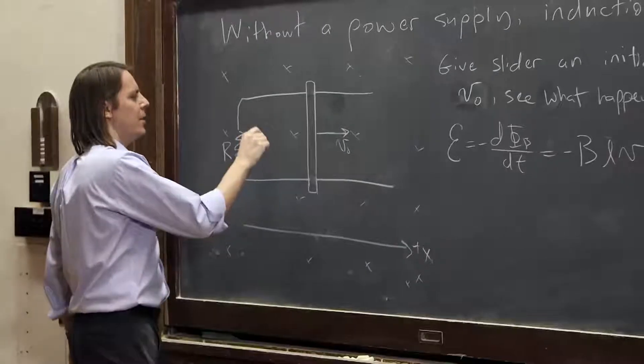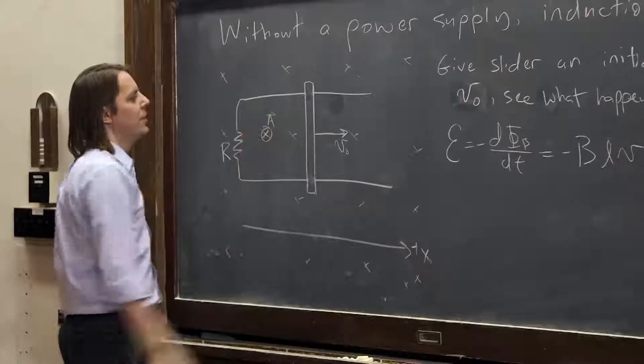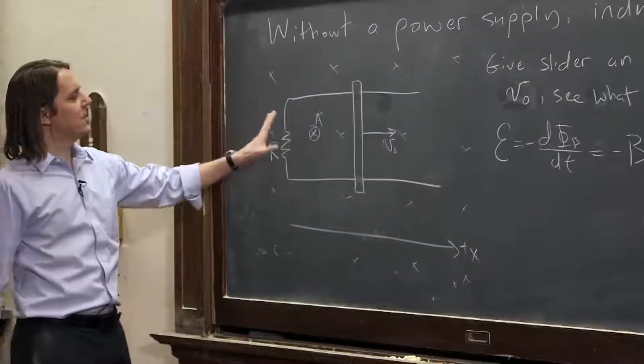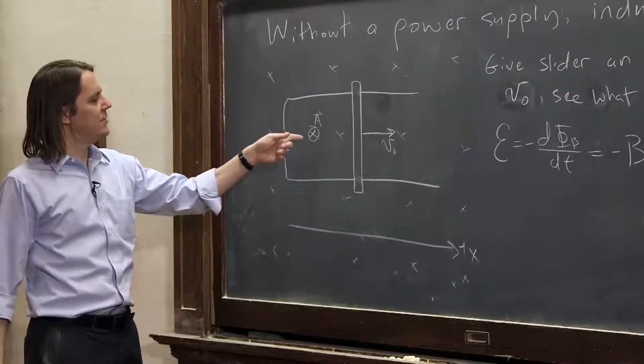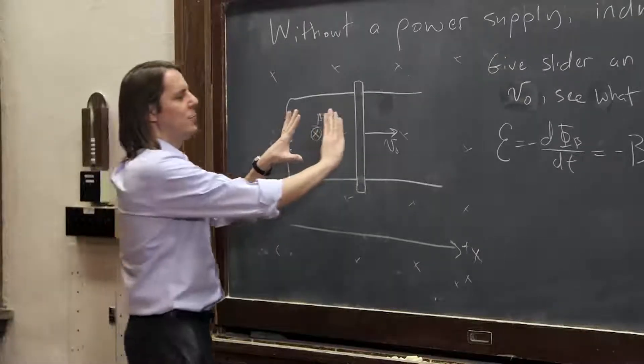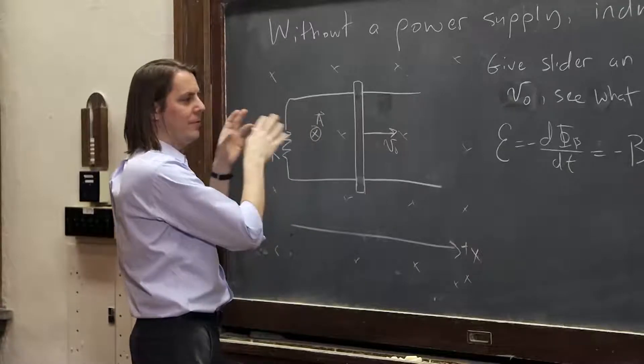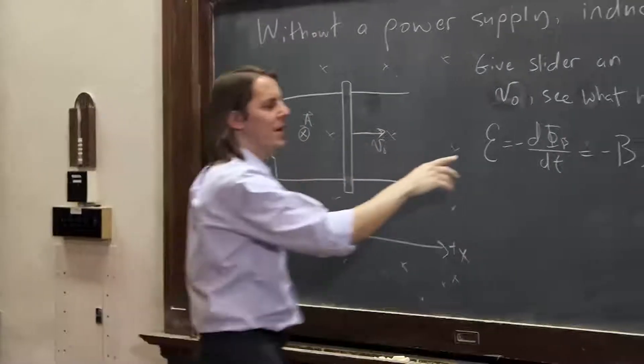What I didn't say last time is that we're assuming the area vector is pointing into the board. And then in that way, it makes sense that the area vector is into the board, the b field is into the board, so it has a positive flux. And as we pull, as this moves this way, we have an increasing positive flux. Therefore, the EMF has to come out negative.